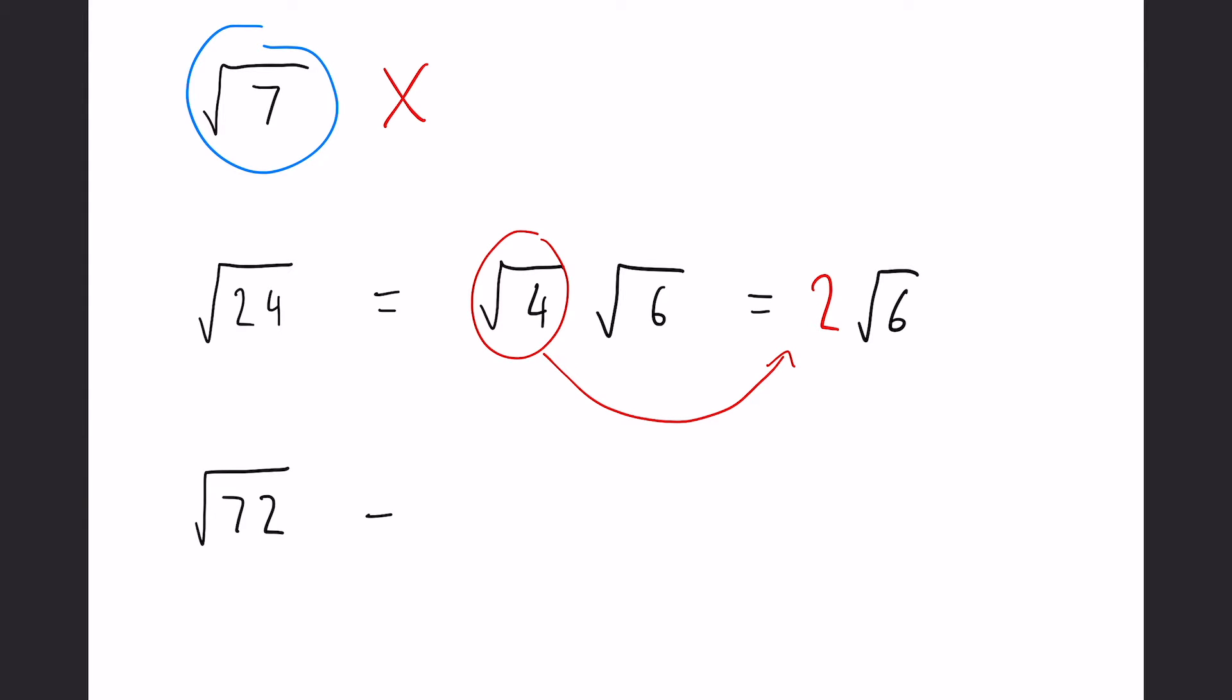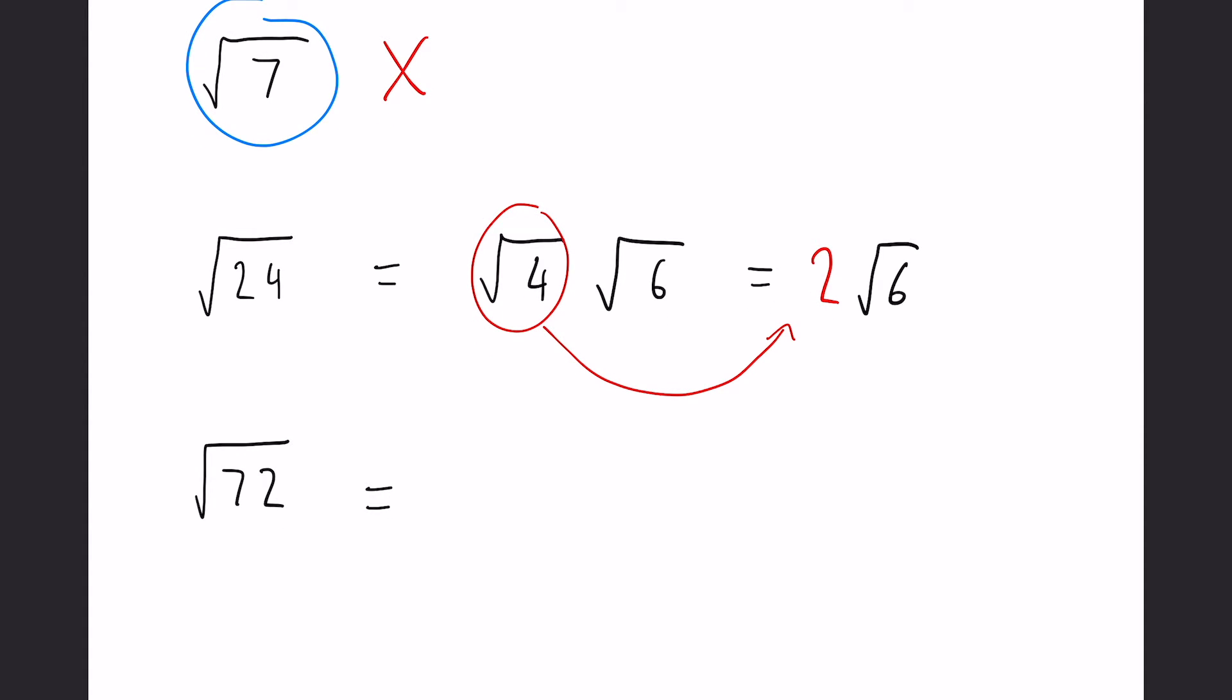Now if we have another go at 72, again if you feel like you're confident with this pause the video, give it a go before I show you the answer. Now the square root of 72 can be broken up to many things. However, we always want to try and pick the highest square number. So in this situation it would actually be 36. So the square root of 36 and the square root of 2 because they times together to make 72. So the square root of 36 makes 6 and then we put the √2 next to it.